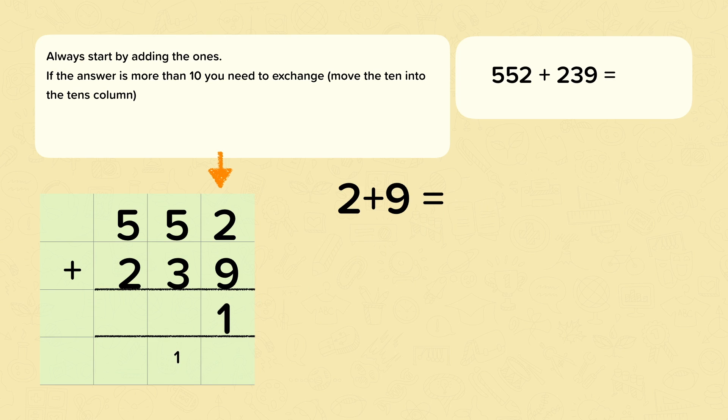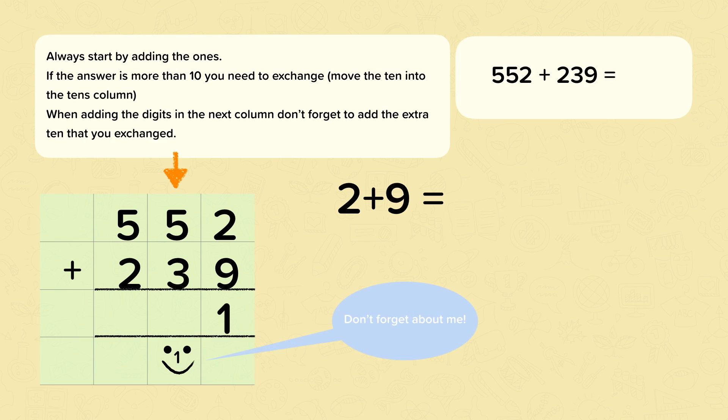Now we move on to the tens. When we're adding the numbers in the tens column, we need to make sure that we add the extra ten that we've exchanged. So five add three add one is nine. So we have nine tens.